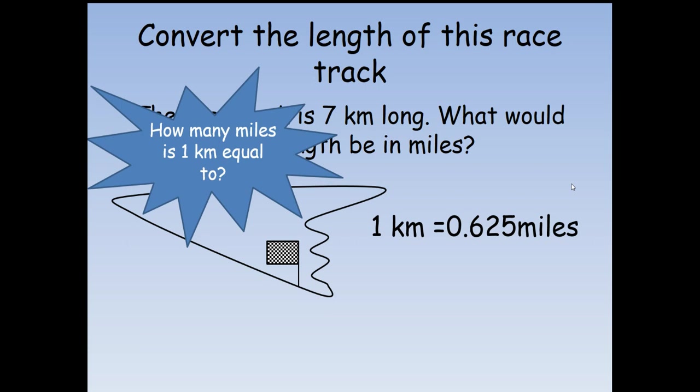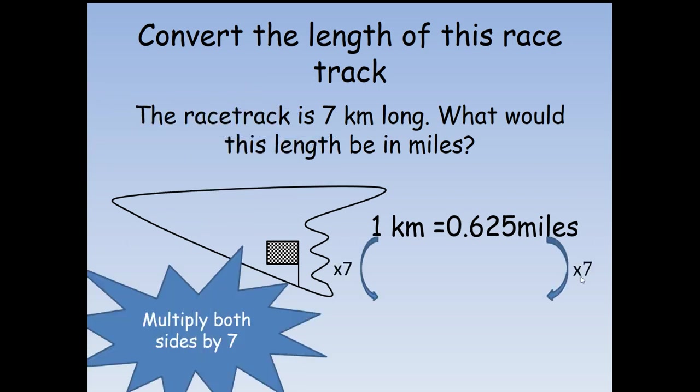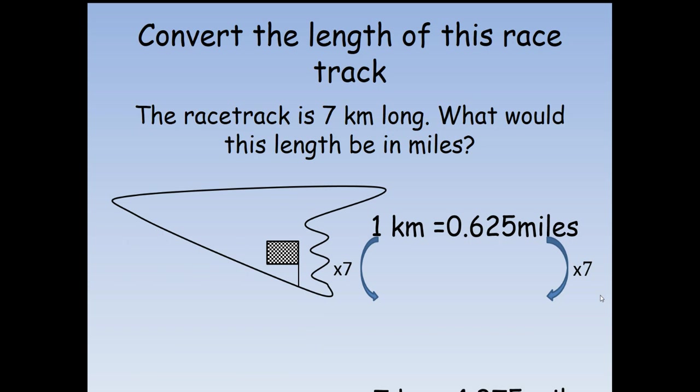Hopefully you paused the video and had a go at this. Let's see if you got it right. If one kilometer is 0.625 miles, for seven kilometers I'd have to times both sides by seven, which hopefully gave you an answer of 4.375 miles.